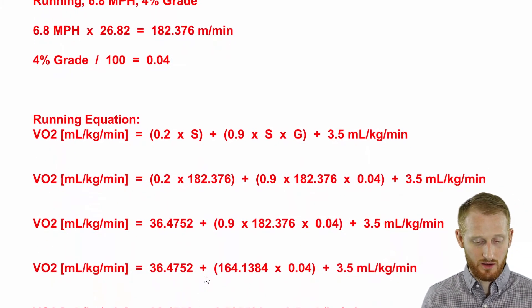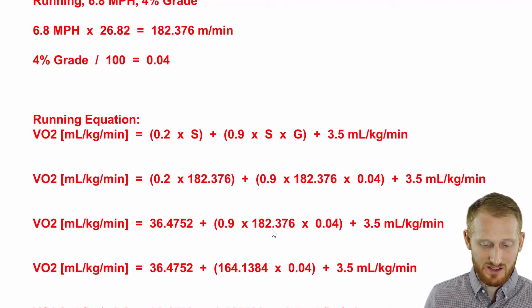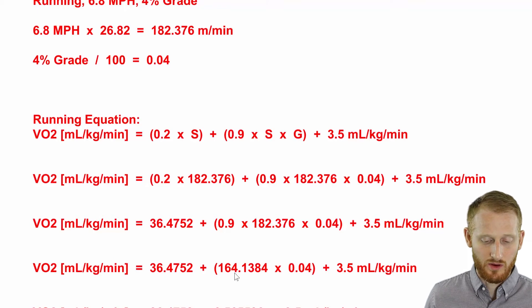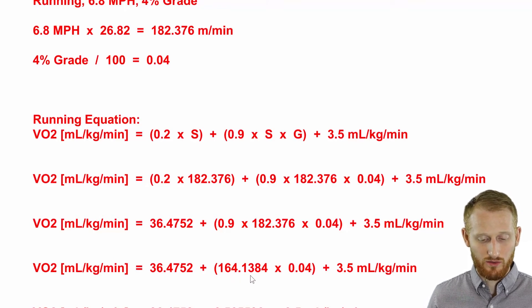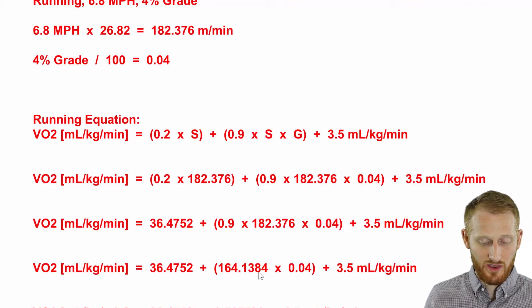We end up with, when we multiply 0.9 times 182.376, we end up with 164.1384. And now we need to, still within this parentheses, multiply by 0.04.